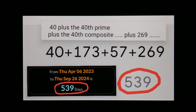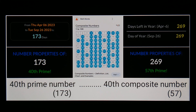I could go further but I just want to keep it as simple as possible. Throw out that last part if you want, but we're talking about 40 and the 40th composite here. The 40th composite number is 57, the 57th prime is 269, this guy called from the 269 area code, the 269th day of the year and the day leaving 269 days has that connection with 173, the 40th prime number.